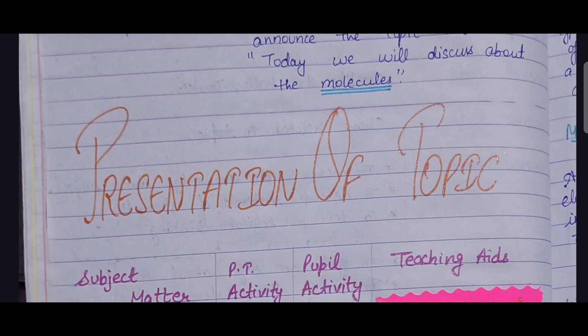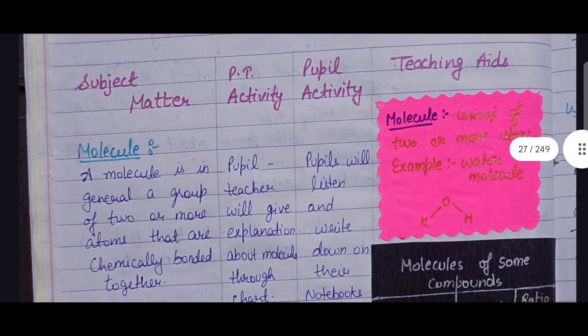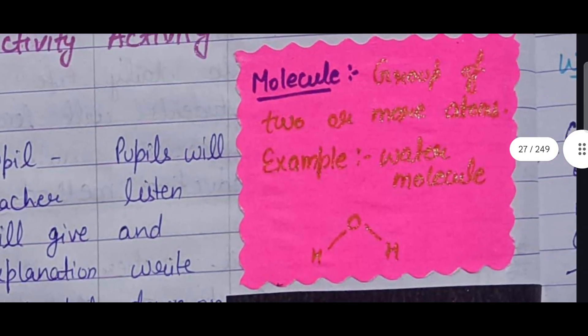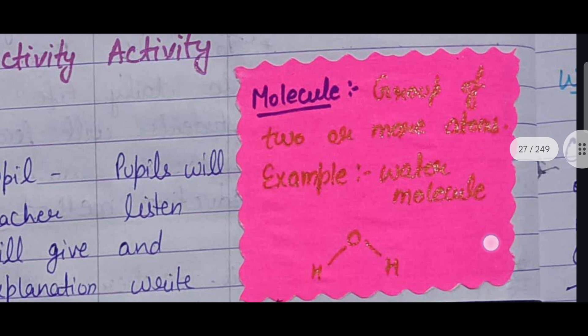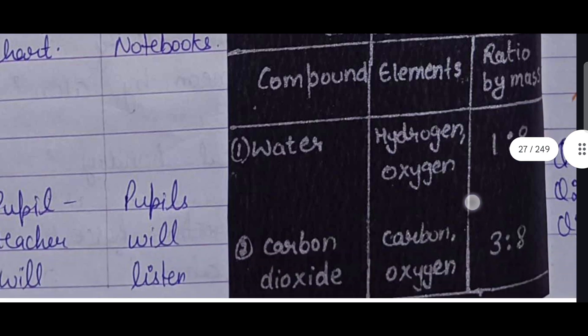The presentation is divided into four columns: subject matter, pupil teacher activity, pupil activity, and teaching aids. The subject matter is the molecule and its definition: a molecule is generally a group of two or more atoms that are chemically bonded together. The PT will explain the topic using a chart or blackboard. Pupils will listen and write in their notebooks. Teaching aids include a chart showing the definition of molecule with examples, and blackboard work.